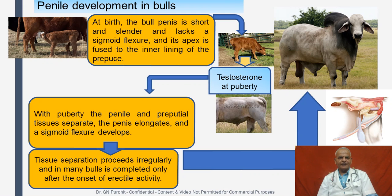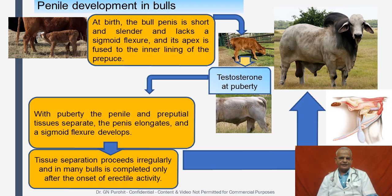As far as penile development in bulls is concerned, at birth the bull penis is short and slender and lacks a sigmoid flexure, and its apex is fused to the inner lining of the prepuce. Because of increased testosterone at puberty, the penile and preputial tissues separate, the penis elongates, and a sigmoid flexure develops. The tissue separation proceeds regularly and in many bulls is completed only after the onset of erectile activity. The adult bull then starts producing the requisite amount of sperm in the ejaculate.